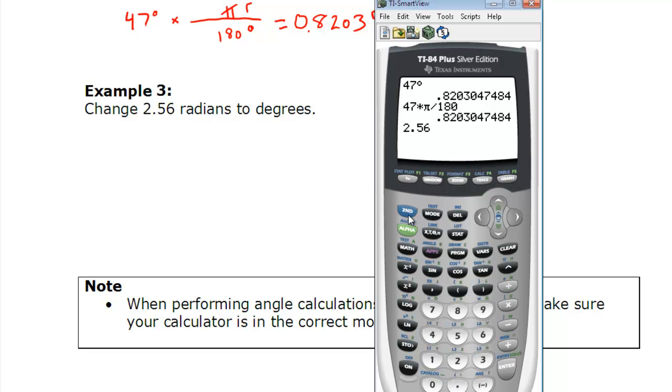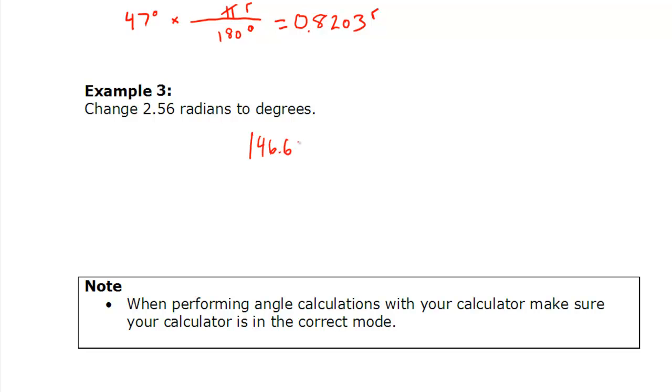So we go second function, angle, we tell it number 3, the radians. We want to change that to degrees, so we check our mode. Well, our mode has to be in degree mode then. So we change that, go back here, hit enter, 146.68, 146.68 degrees. And if we do it using the conversion, we would have to multiply by 180 degrees over π radians. Radians cancel, we're left with degrees, and sure enough, if you multiply, this is what you get.